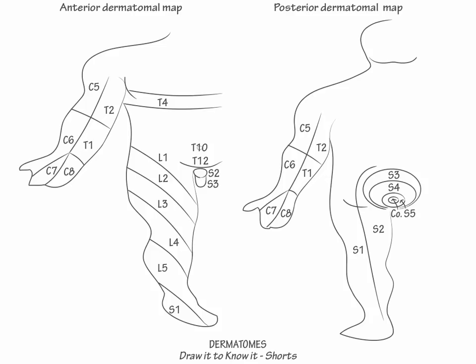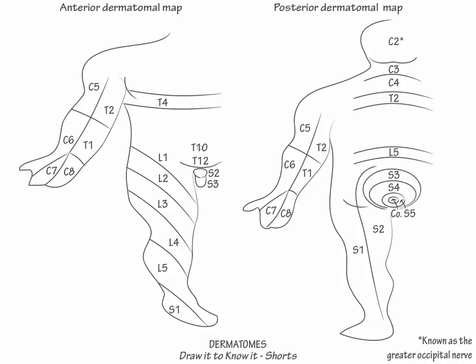Show that the posterior ramus of C2 covers the back of the head, and indicate that it is known as the greater occipital nerve. Finally, indicate that C3 and C4 cover the posterior neck, and that T2 through L5 cover the upper back to the buttocks.